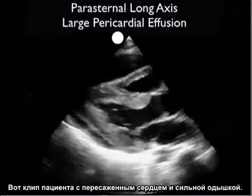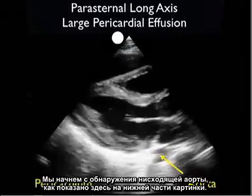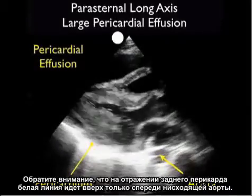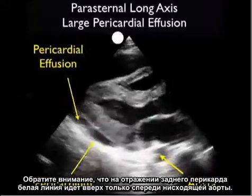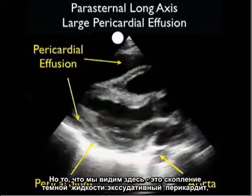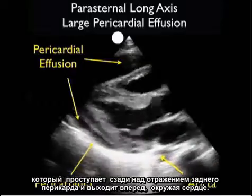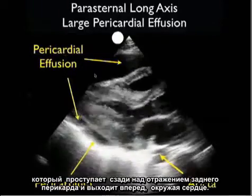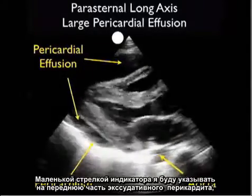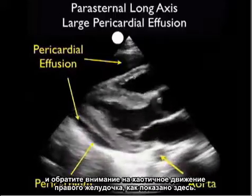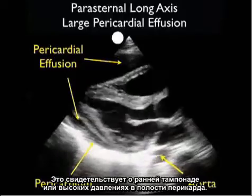Here's a clip taken from a patient who presented with a transplanted heart and acute shortness of breath. We'll begin by identifying the descending aorta at the bottom part of the picture. Note the posterior pericardial reflection, that white line coming off just anterior to the descending aorta. What we see here is the presence of a dark fluid collection — a pericardial effusion that layers up posteriorly above the posterior pericardial reflection and comes anteriorly to surround the heart. With a small indicator arrow, I'll point to the anterior portion of the pericardial effusion and note the chaotic movement of the right ventricle. This is indicative of early tamponade or high pressures within the pericardial sac.